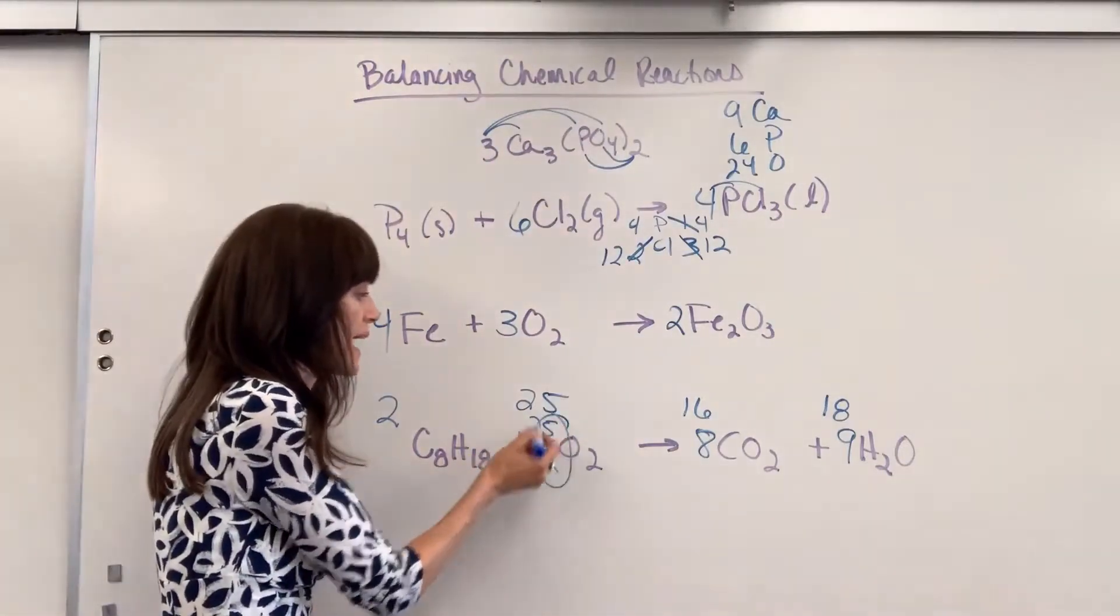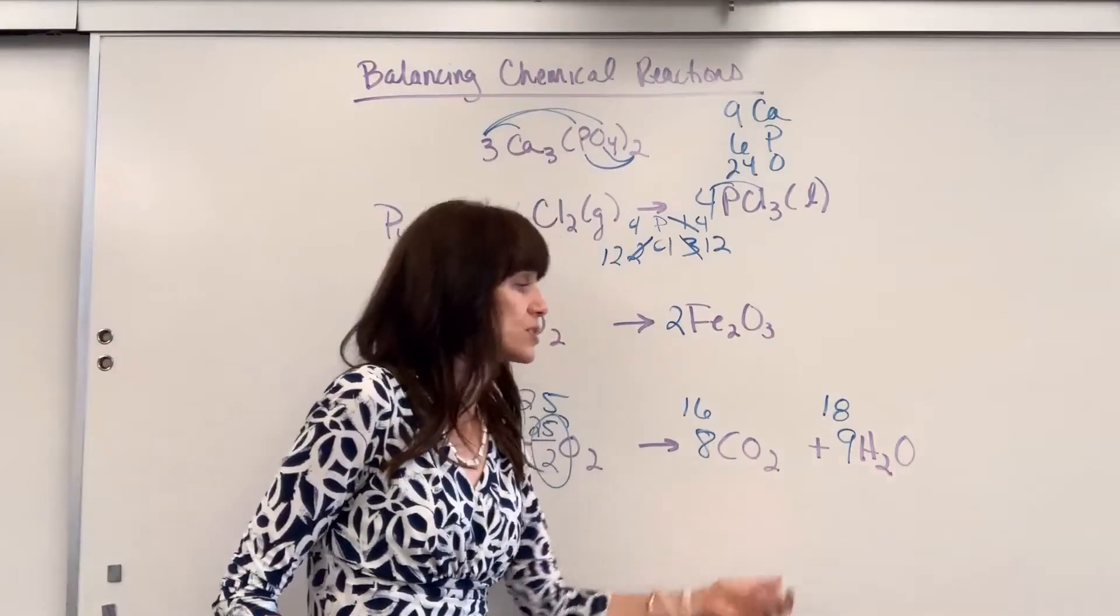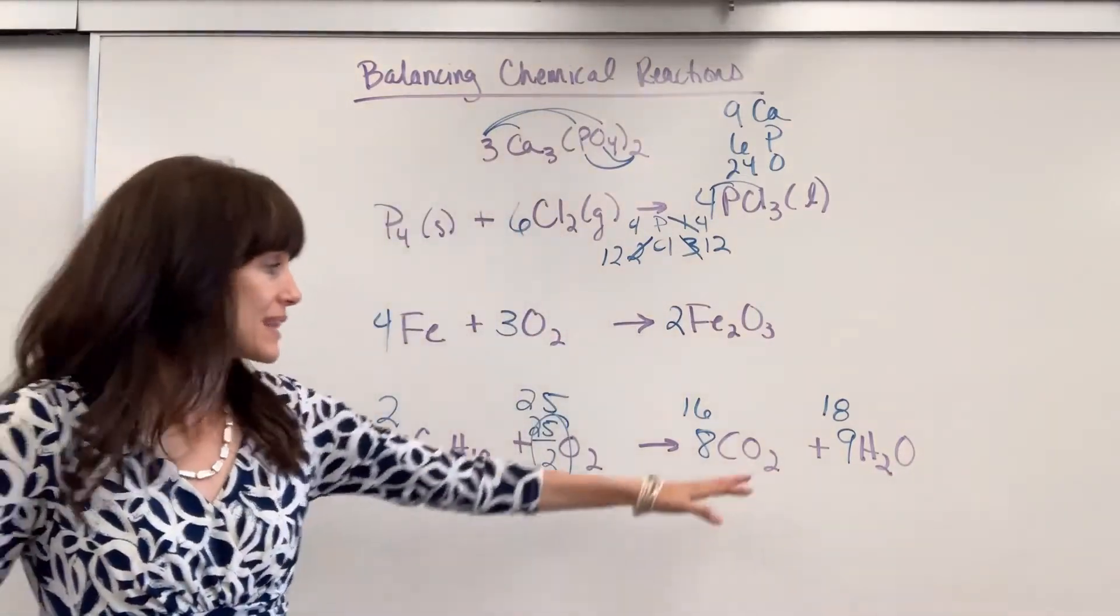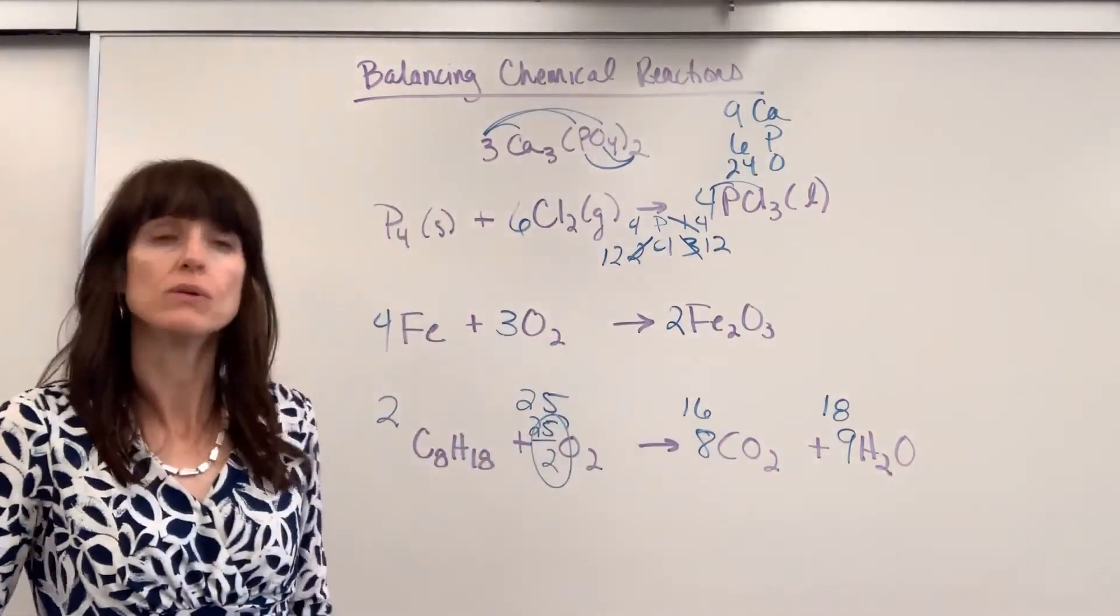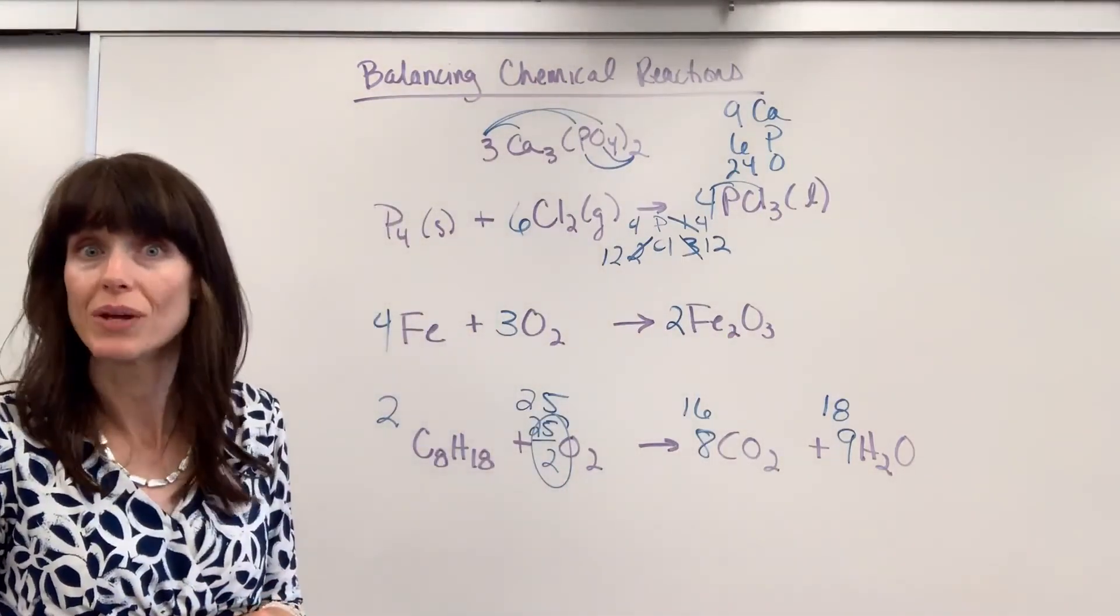I really like using that half. If you come up with oxygen even, and then your oxygen on the product side is odd, take this number, just divide it by two, and then you can multiply that whole reaction through by two and get everything as whole numbers.